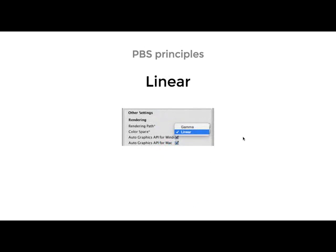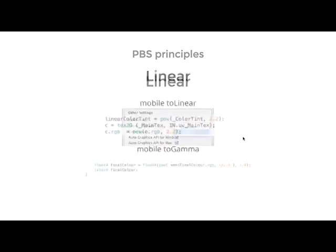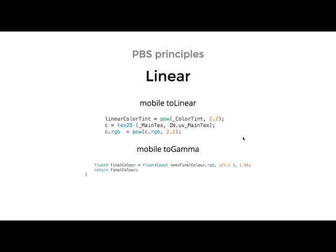If you want to use linear in Unity on PC, you just check the setting in your build settings. But if you are on mobile, you have to do that in your shaders. Every time you sample a texture or get a color, you'll have to multiply them to the power of 2.2. Then at the very end of your scene rendering, you need a full-screen effect that puts the final color back to gamma — that's to the power of 1 divided by 2.2. This process looks very simple, but it leads to a very interesting conversation with artists where everyone ends up confused.